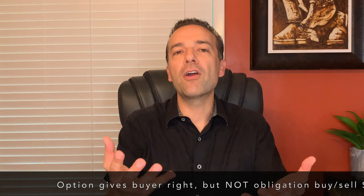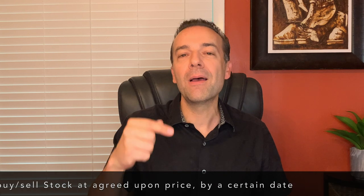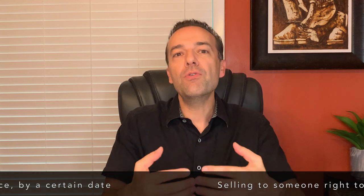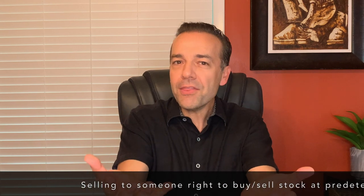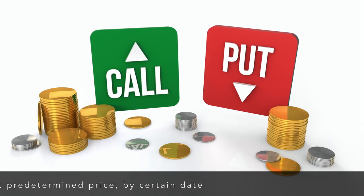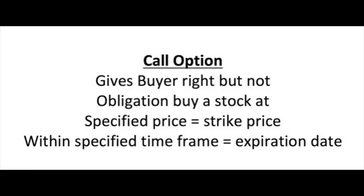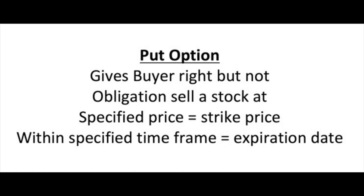A stock option gives the buyer the right but not the obligation to buy or sell a stock at an agreed-upon price by a certain date. If you're a seller of that option, you are selling to someone else the right but not the obligation to buy or sell a stock at a predetermined price by a certain date. There are two types of options: calls and puts. A call option gives the buyer the right but not the obligation to buy a stock at a specified strike price within a specified expiration date. A put option gives the buyer the right but not the obligation to sell a stock at a predetermined strike price within a specified expiration date.